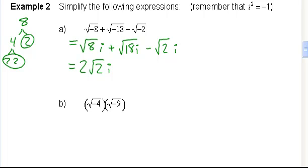So, 2 root 2i, what's the root 18 going to turn into? 3 root 2 times i, and finally subtract root 2i. Now, can I add those things together?